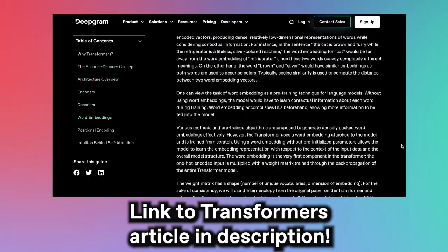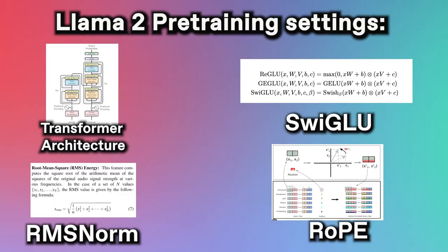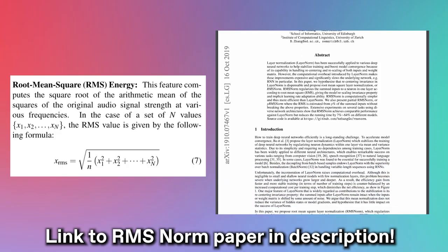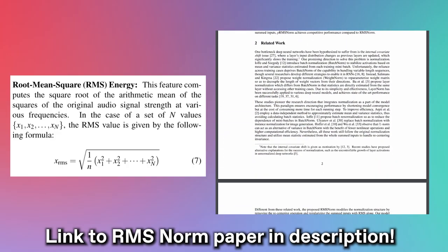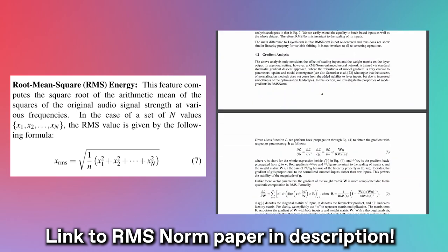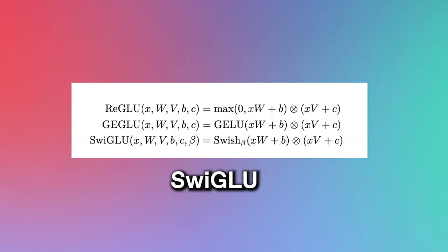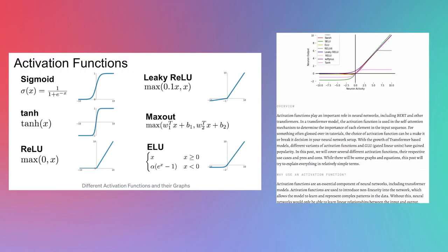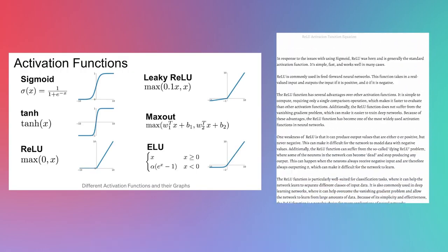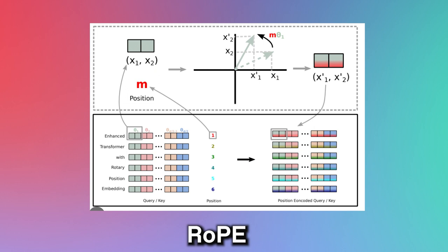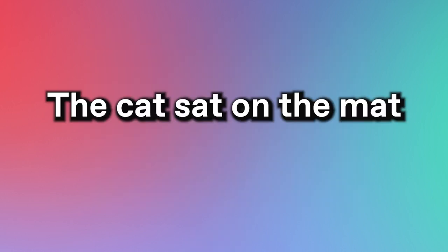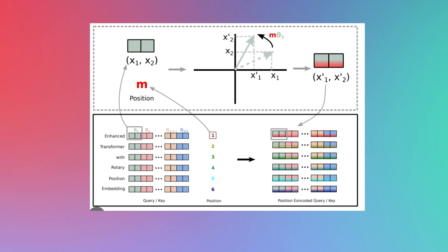Llama 2 uses a classic transformer architecture to transform input text into an appropriate response. RMS-Norm ensures the model's internal calculations don't go off the rails during training, simplifying the massive 2,000 billion tokens into a more digestible form. The SwiGLU function determines whether a neuron in the neural network should be activated. RoPE is the method Meta uses to teach Llama 2 about the importance of word order — for example, that 'cat' comes before 'sat' in 'the cat sat on the mat.'